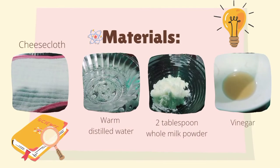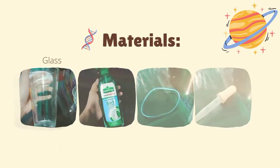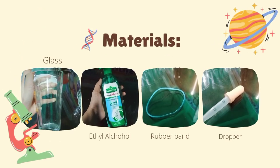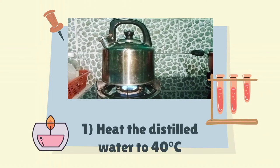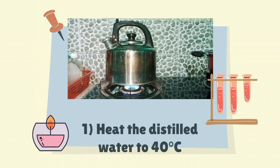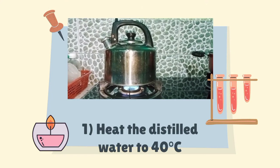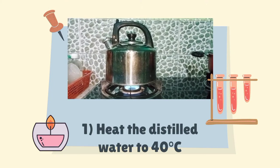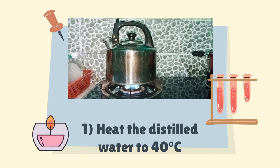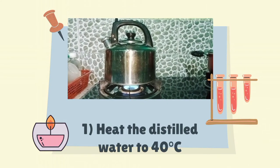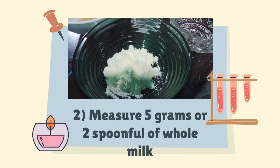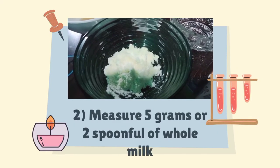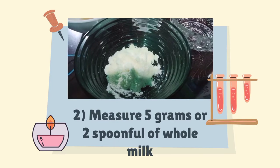Here are the materials we will be using. Here are the procedures. First, heat the distilled water to 40 degrees Celsius. To know the temperature, use a thermometer or simply dip your elbow into the water. If your elbow can tolerate the temperature, it means it is warm enough and ready to use. Second, measure 5 grams or 2 spoonfuls of full milk.